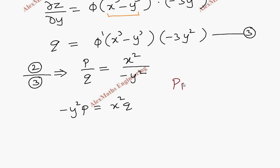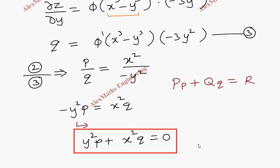And we have to give the answer in the form of Pp + Qq = R. So taking this to the other side we get y²p plus x²q, and on the other side it is zero. So this is our required partial differential equation after eliminating the arbitrary function phi.